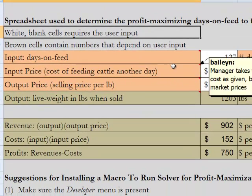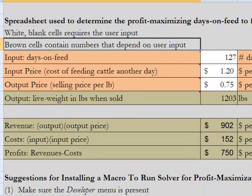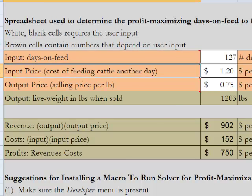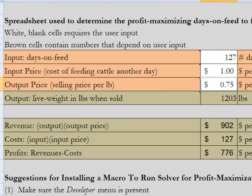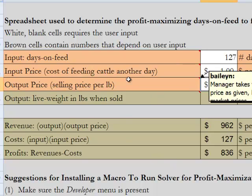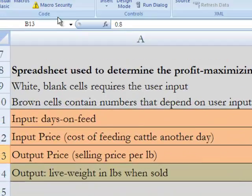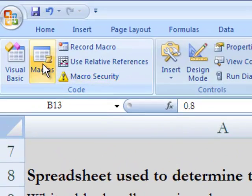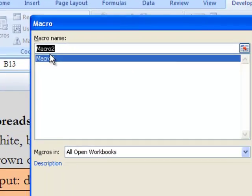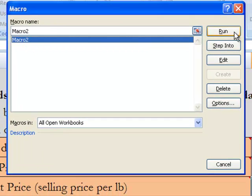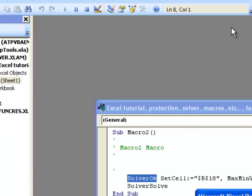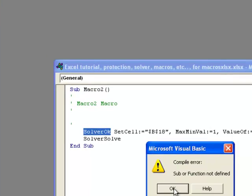Now we have our macro. To show you what it does, I'm going to change these prices and run Solver again. But now all I have to do is come over to Macros, select Macro 2, and run.